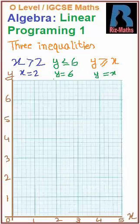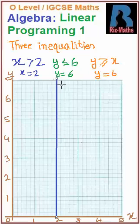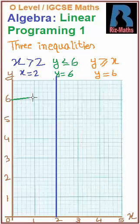First of all, the line x equals 2 — the blue one. x equals 2 is a vertical line passing through x equals 2, so this will be this line. Second, the green one: y equals 6 is a horizontal line passing through y equals 6 on the y-axis, so it is this one.